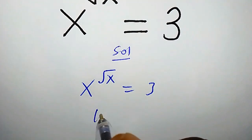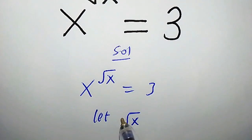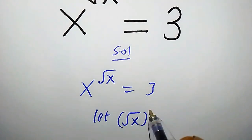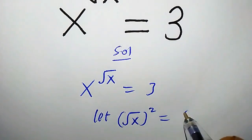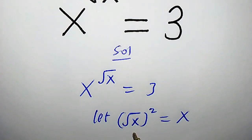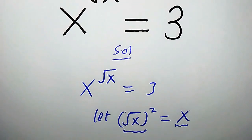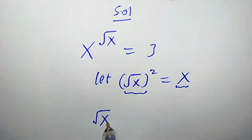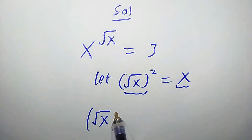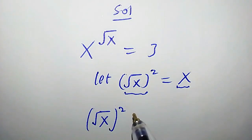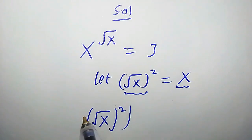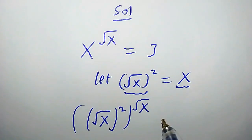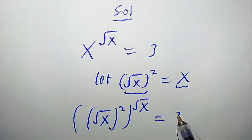Let's assume square root of x, all squared, is equal to x — which is indeed true. So anywhere we see x, we will replace it with this. From here, we're going to have square root of x, all squared, times square root of x, equals 3.